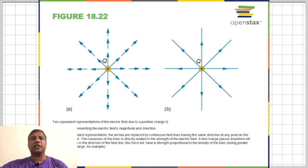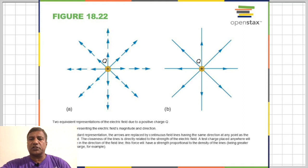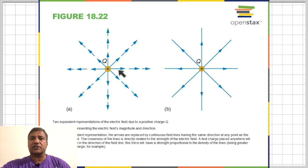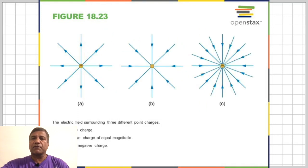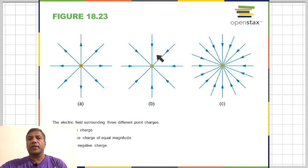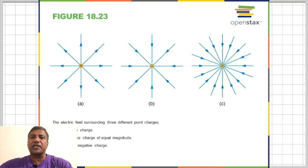The electric field is represented using electric field lines. For a positive charge, the electric lines go away from it; for a negative charge, the lines come towards it. The number of lines indicates the strength of the charge — a stronger charge has more lines or lines that are closer together. Here a positive charge has lines going away, while a bigger negative charge has more lines coming towards it.